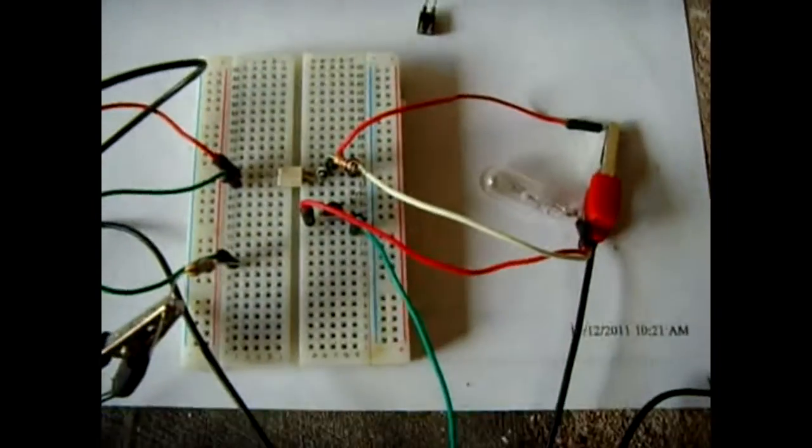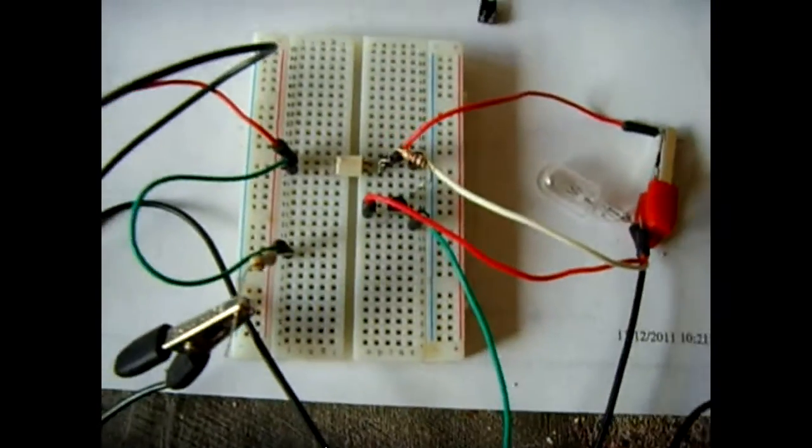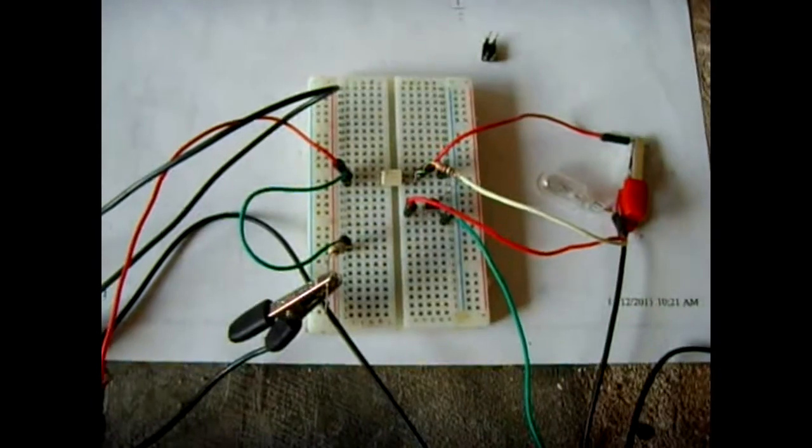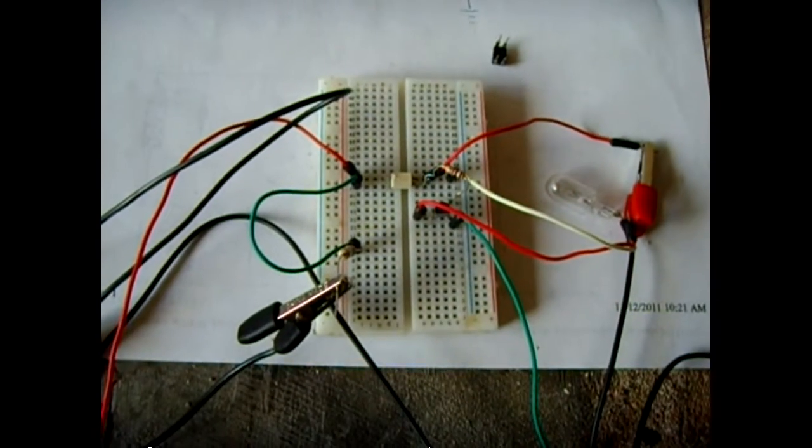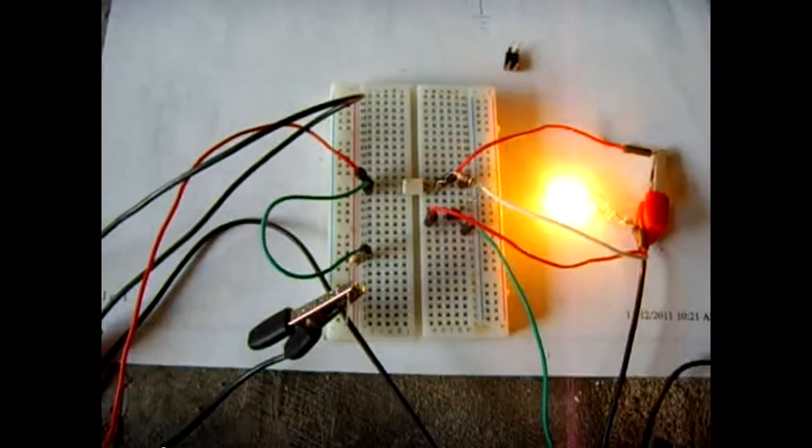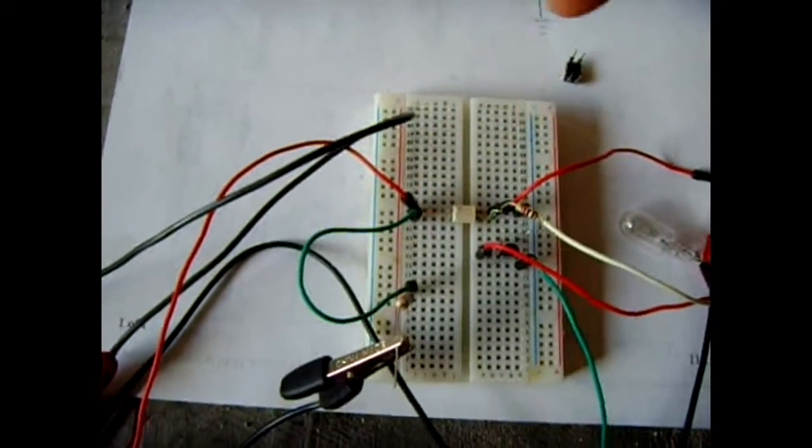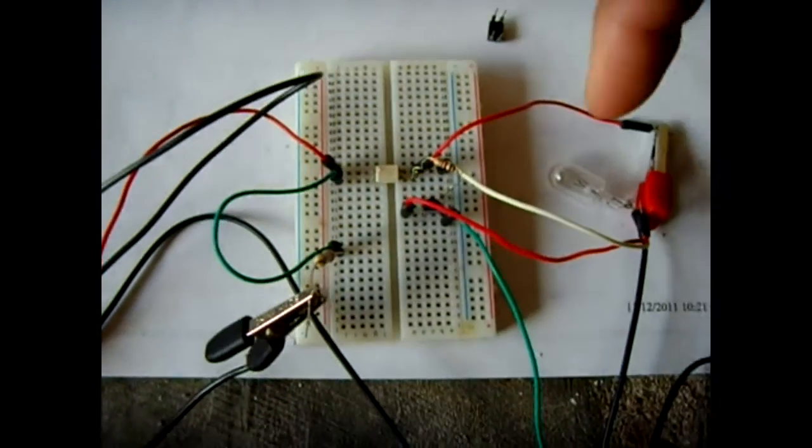I'm going to demonstrate how this light comes on without touching that side of the circuit. I'm going to touch the battery right here. So you might think I'm turning the light on with this battery, but I'm not. I'm turning the LED on, which is shining the light on the phototransistor, which is activating this circuit.